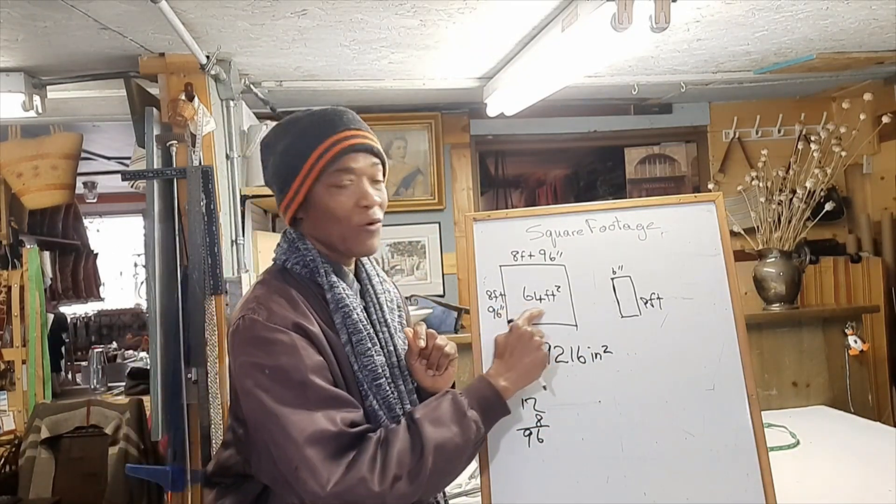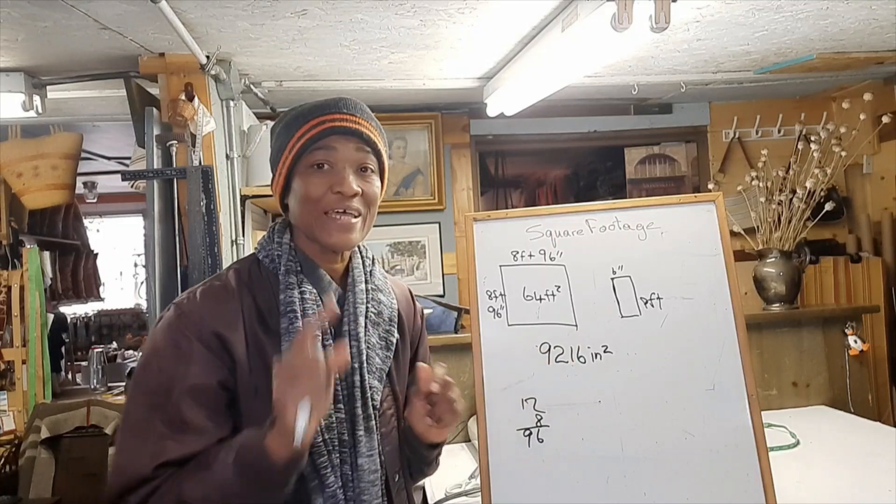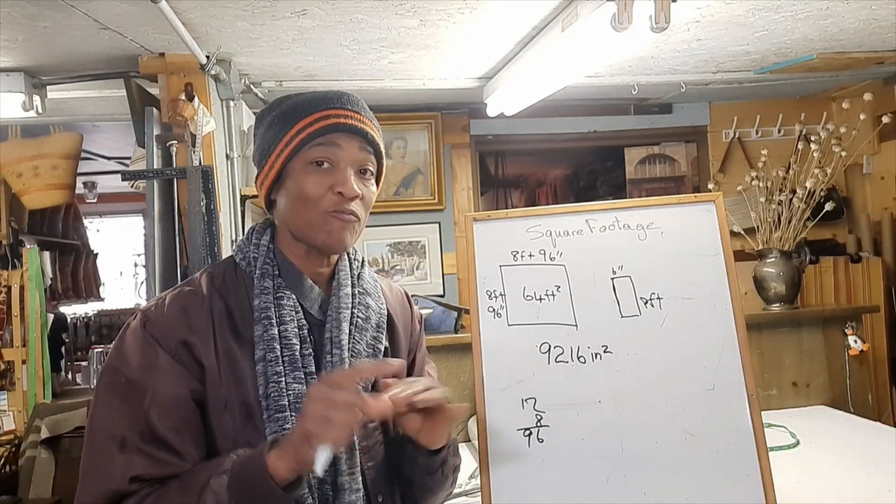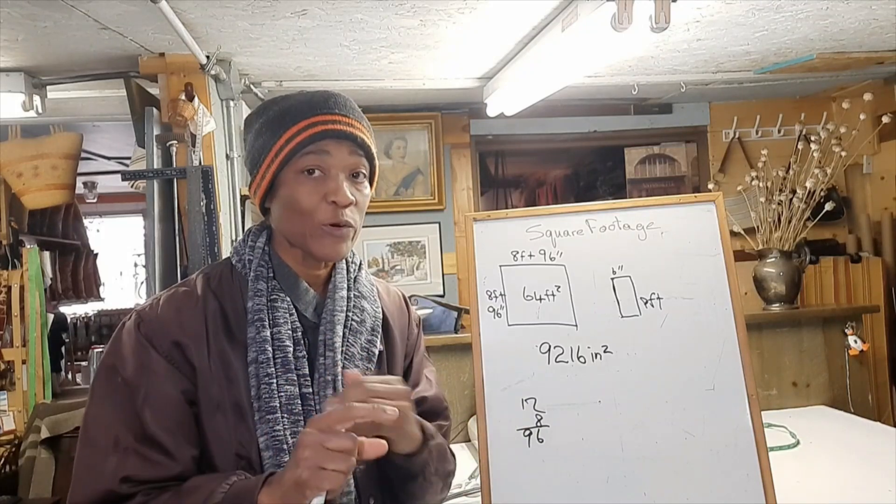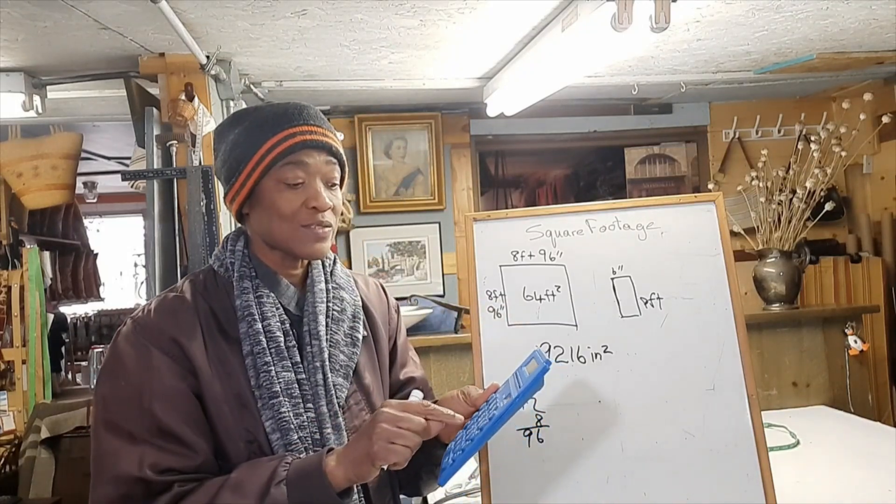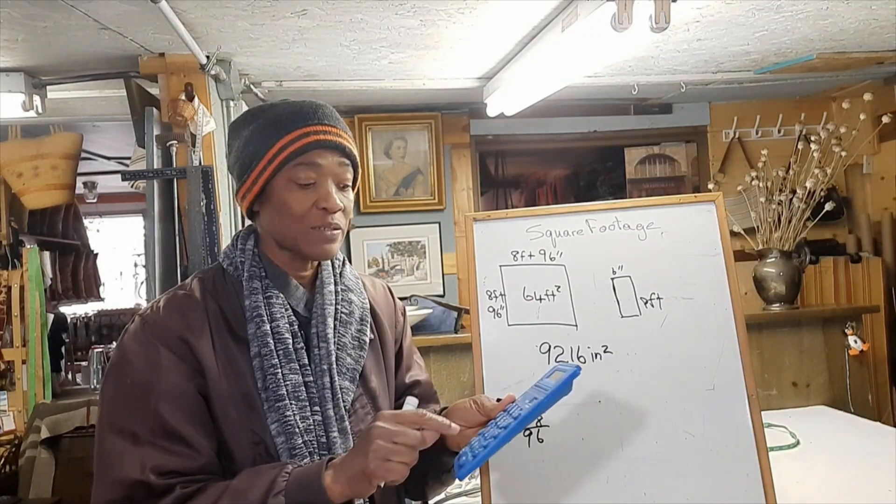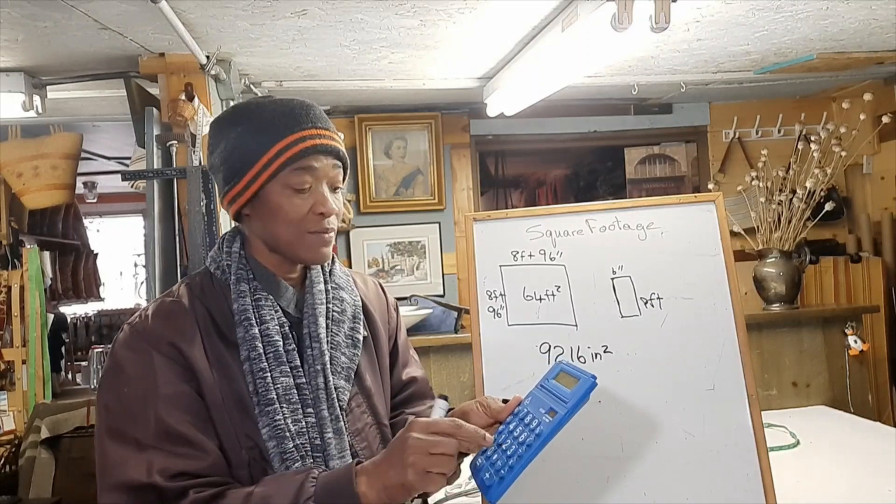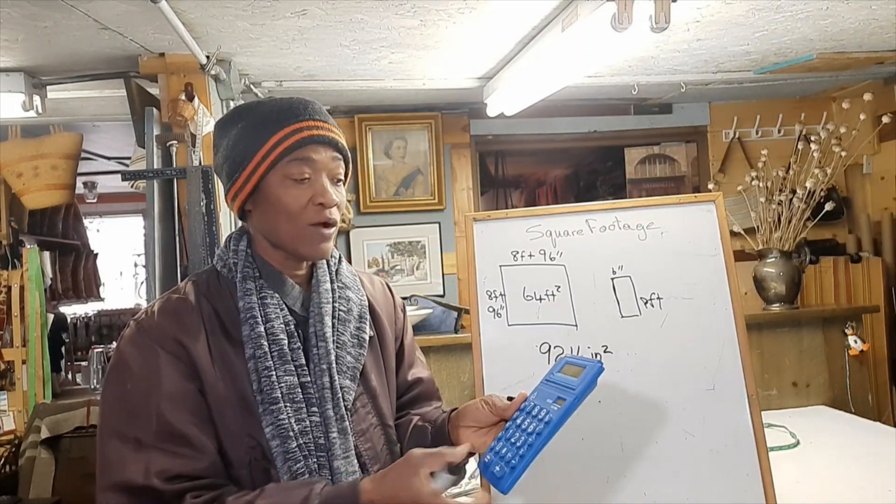We could also use 64 square feet to find the square footage in inches, but in that respect we would have to multiply 12 by 12, which is 144, times 64. Because we're dealing with square feet here, that is why we have to multiply 12 by 12. So it's 144 times 64 equals 9,216 inches.